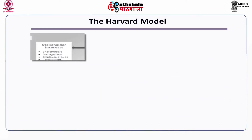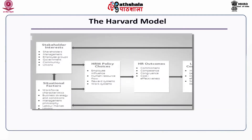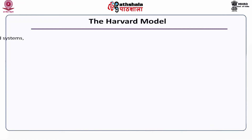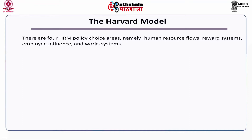The various components of the Harvard Model include: stakeholder interests, situational factors, HRM policy choices, HR outcomes, and long-term consequences. There are four HRM policy choice areas: human resource flows, reward systems, employee influence, and work systems.